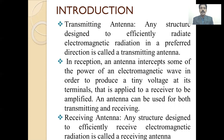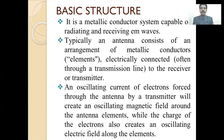This receiving antenna is an electromagnetic system that will collect the radiating energy from the medium. Generally, a transmitting or receiving antenna may be an ordinary element — an antenna structure developed with metallic conductors. All these metallic conductors are equipped with balanced transmission lines. When these metallic conductors act as antennas, oscillating current of electrons forced through the antenna by a transmitter will create oscillating elements, while the charge of electrons creates an oscillating electrical field along the elements.